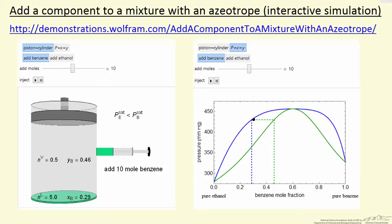The location of the interactive simulation is indicated here. So the idea is we have a piston and cylinder, two components in vapor-liquid equilibrium, in this case benzene and ethanol, and we want to ask the question...